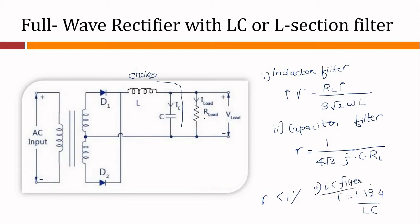In this LC filter expression, the term RL does not appear. In the inductor filter, RL appears, and in the capacitor filter, RL also appears — meaning the ripple depends on load resistance in those cases. But in the case of LC filter, looking at the expression, we don't have any RL component. That means the output voltage ripple is independent of R load — the ripples are independent of the load resistance.